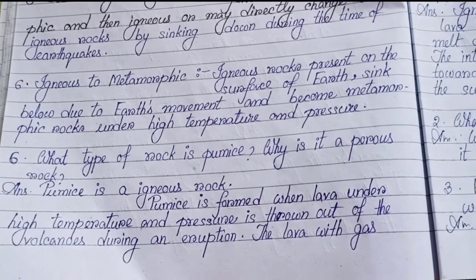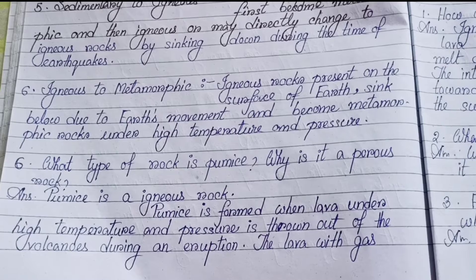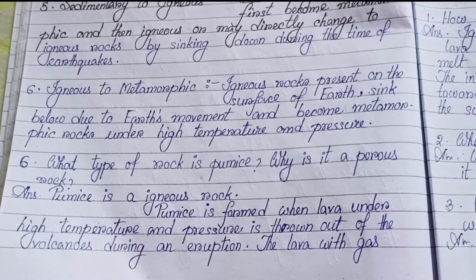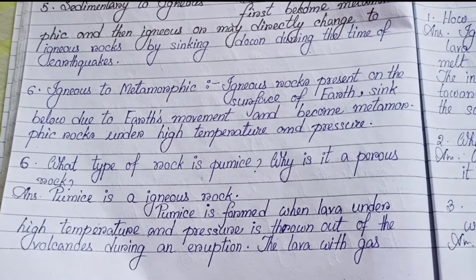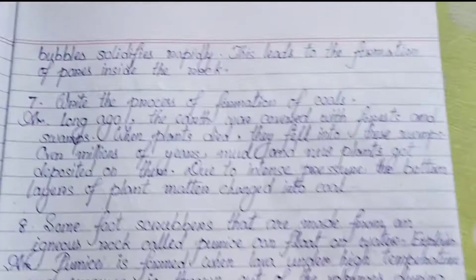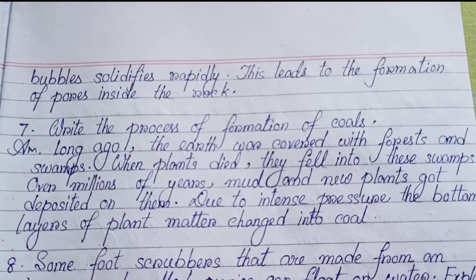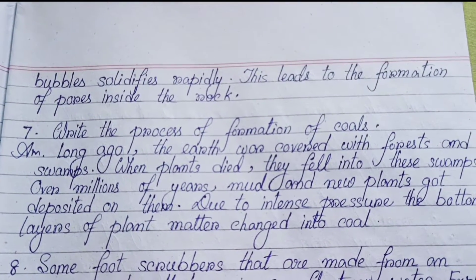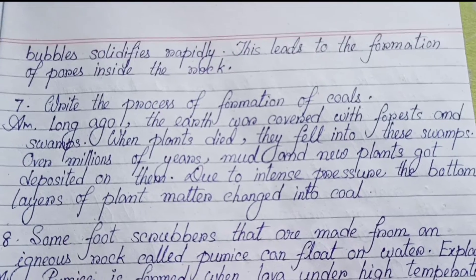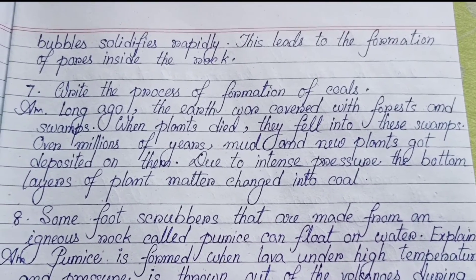Number six: What type of rock is pumice and why is it porous? Pumice is an igneous rock. It is formed when lava under high temperature and pressure is thrown out of volcanoes during an eruption. The lava with gas bubbles solidifies rapidly, which leads to the formation of pores inside the rock.